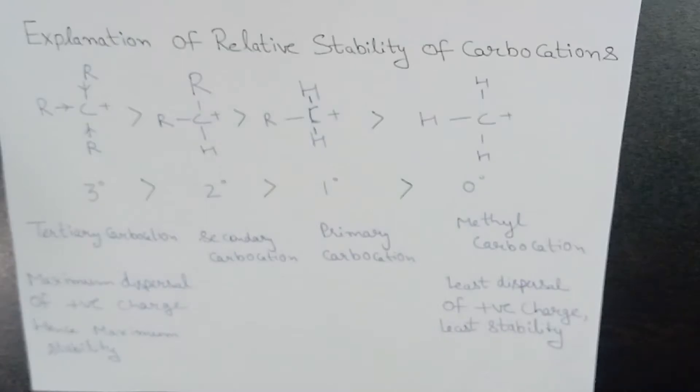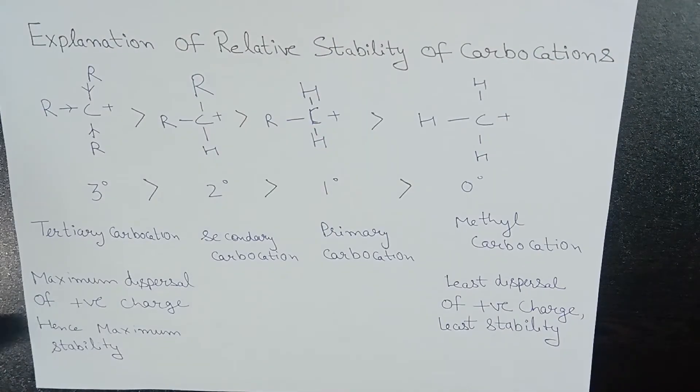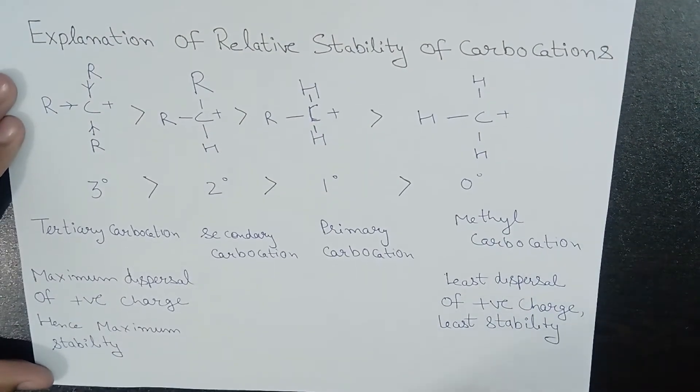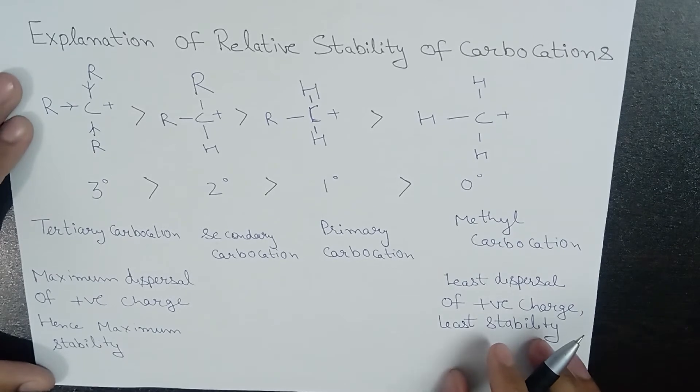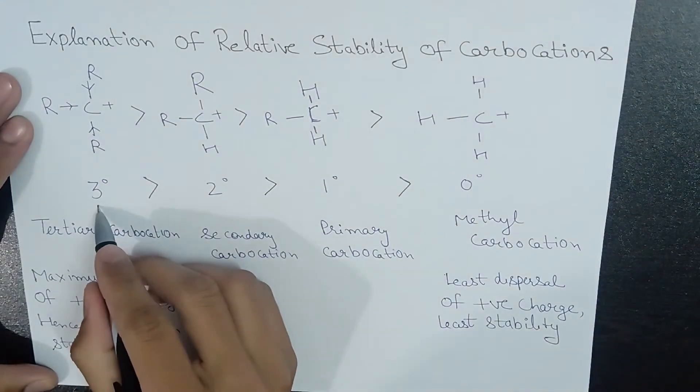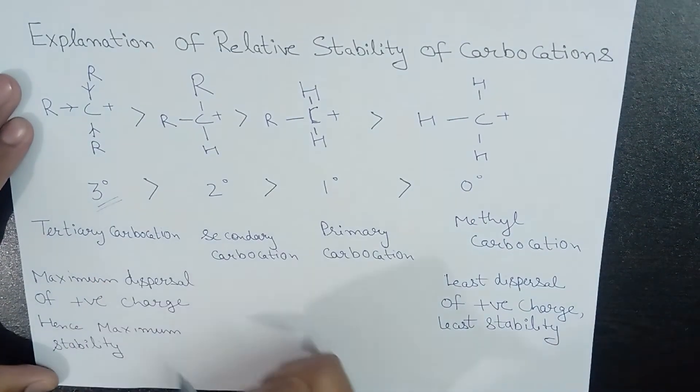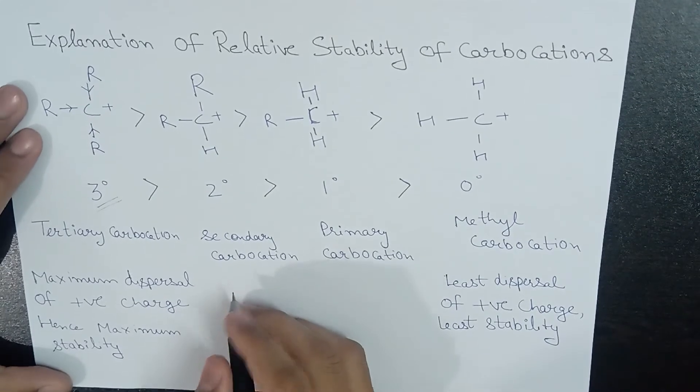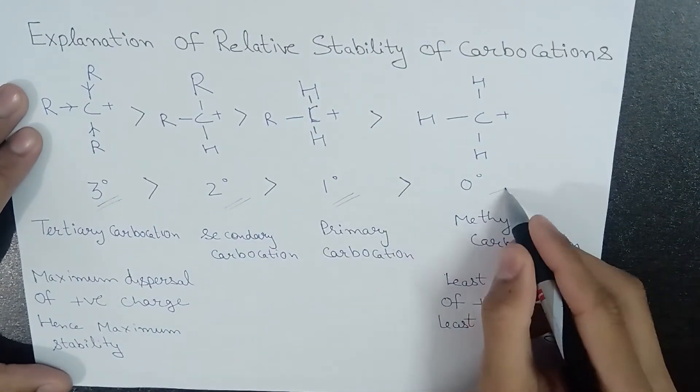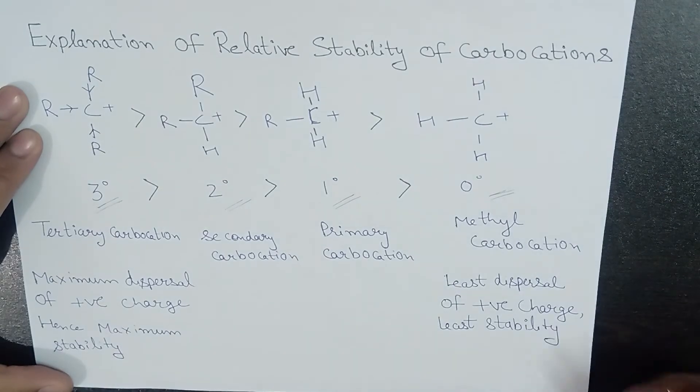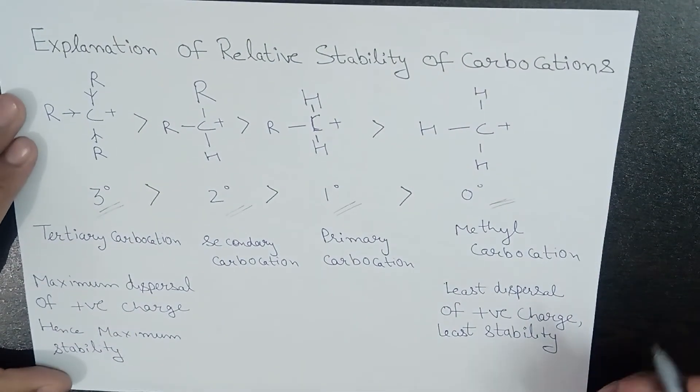Now the explanation of relative stability of carbocations. The stability of carbocation is in order: 3 degree are considered the most stable carbocations, then 2 degree, then 1 degree, and 0 degree is considered the least stable among all.